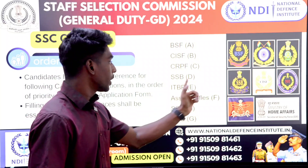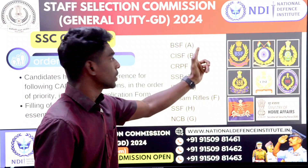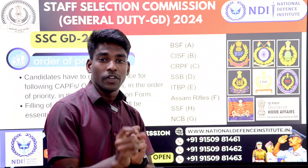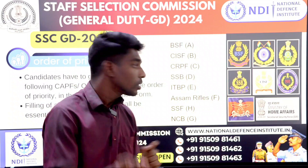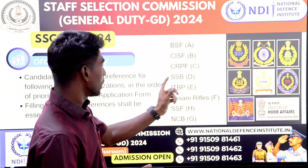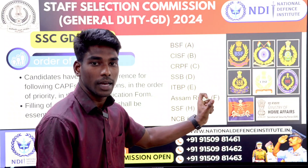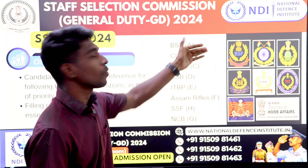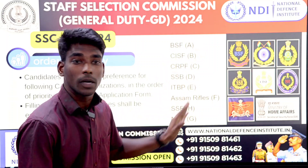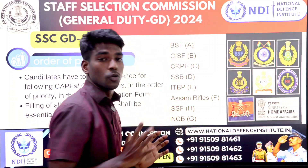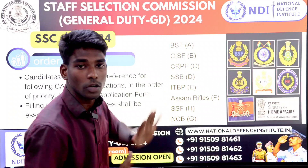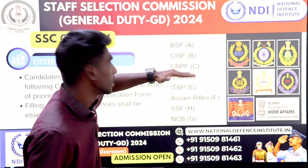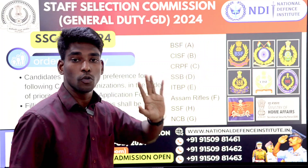When you apply, you choose a force preference — for example, first preference SSB, second BSF, third CISF. Based on the cut-off, you will be allotted accordingly. If you clear the cut-off for CISF, you will be placed in CISF based on your stated preference.